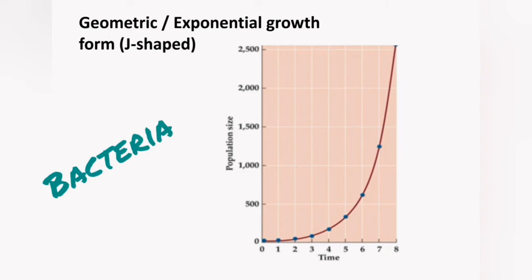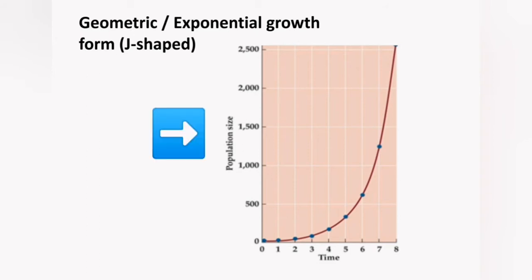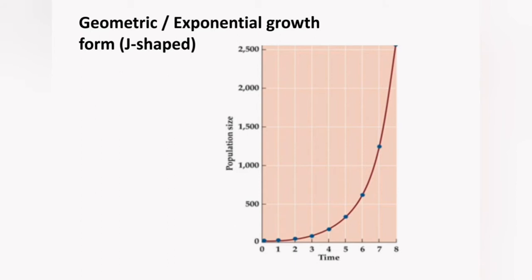This J-shaped growth form is very common amongst bacteria. On the X-axis we have time, and on the Y-axis we have population size or the number of individuals. The population starts at time zero as a very small population, increases slowly at first, and then as time passes the population size increases rapidly. This sudden upsurge in the number of individuals is called exponential growth.